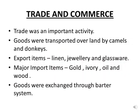In this slide we understand trade and commerce — the buying and selling of goods. Trade was an important activity. Goods were transported over land with the usage of camels and donkeys. The main items of export were linen, jewelry and glassware. The major import items — which are goods brought from another country — were gold, ivory, oil and wine.